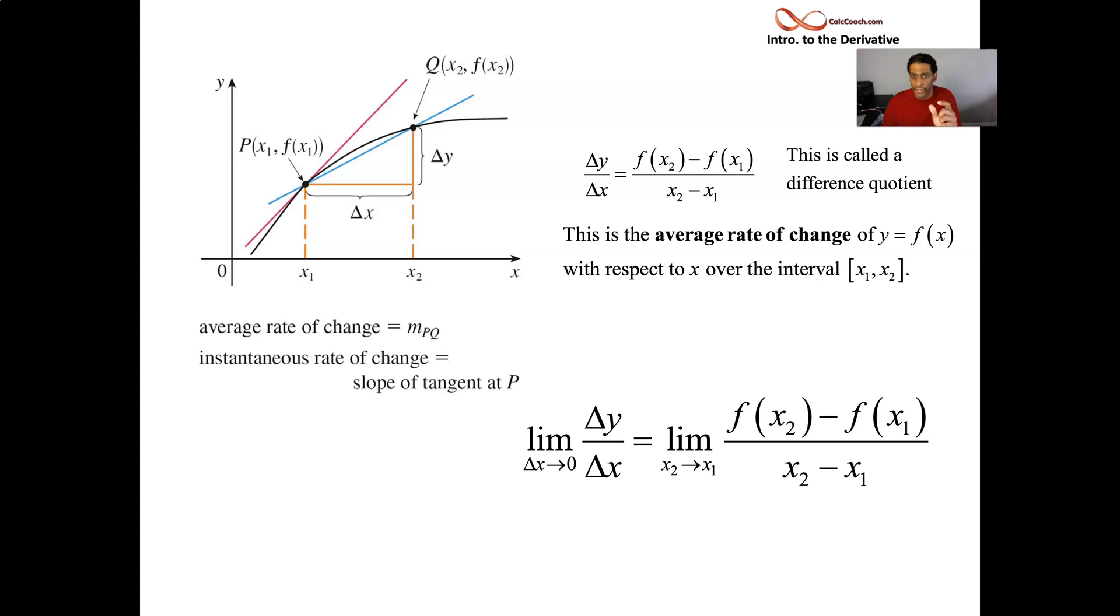As we take the limit, as the gap between them goes to zero, the delta x, the change in x goes to zero, then we can say what we have in hand is the instantaneous rate of change, found by taking the limit of the average rate of change. We're using the same words we used in the other videos. Secant line slope represents average rate of change. Tangent line slope represents instantaneous rate of change.